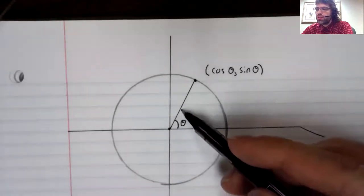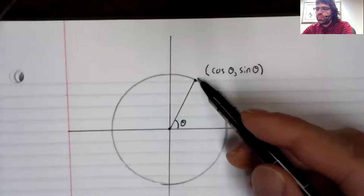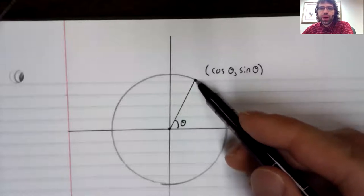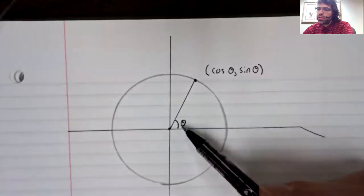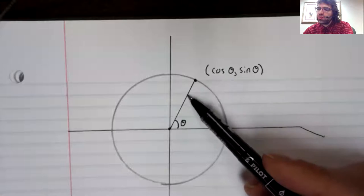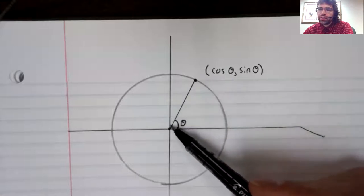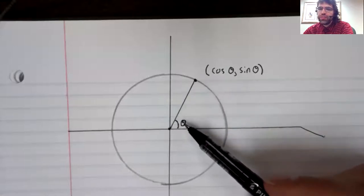We create this line segment, we look at the x and the y coordinate of this point. And traditionally, this line segment is defined via an angle.